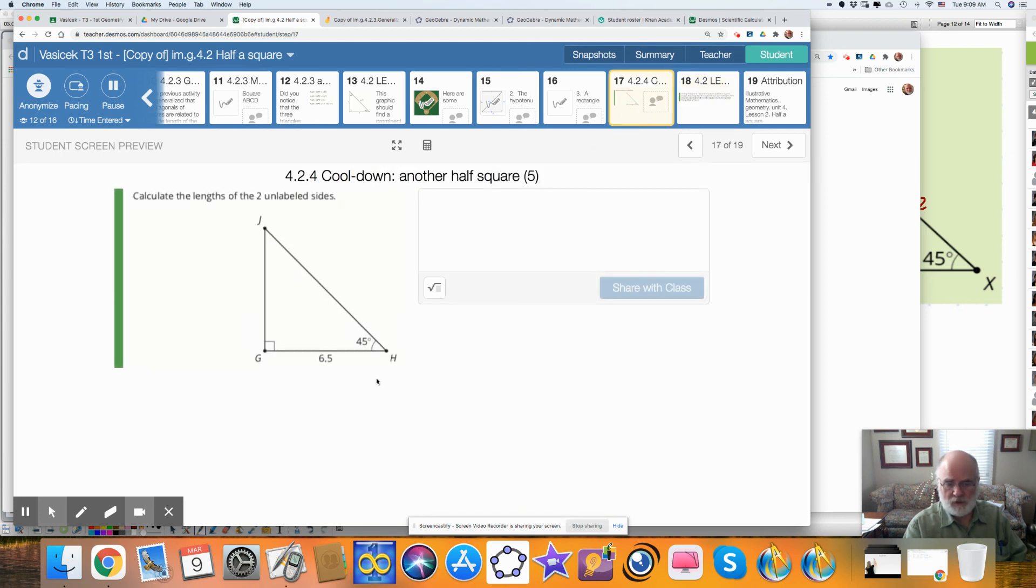So in the closing, you should be able to find that this, this is 6.5, this would be 6.5, and this would be 6.5 times the square root of 2, or times 1.4.